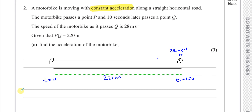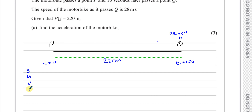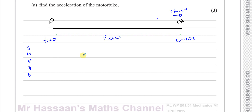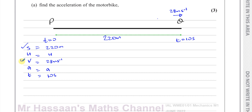As we have constant acceleration throughout this whole section, we can use the SUVAT equations. Here we know S is 220 meters. We don't know what U is. We know V is 28 meters per second. We have to find A, and T is 10 seconds. So we've got to think of what equation we're going to use that involves S, V, A, and T.